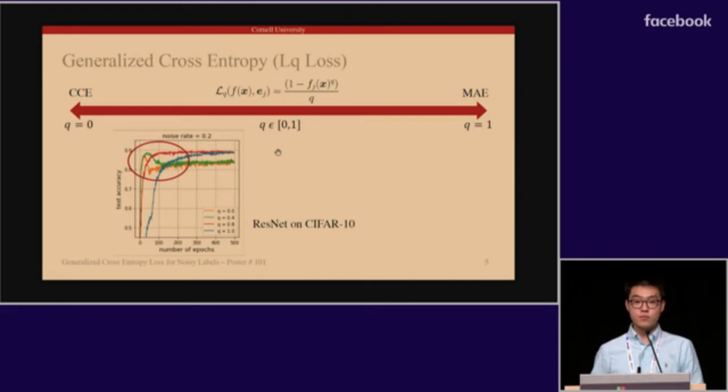Hence, there is a trade-off for optimal value of q, and we empirically found that q equal to 0.7 has been effective for all our experiments. The optimal q value can be found by cross-validation.